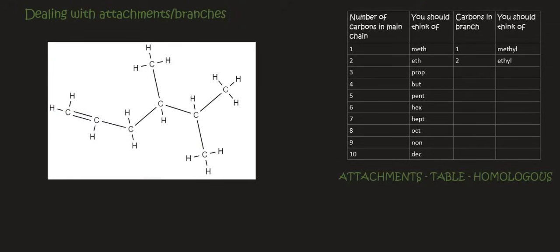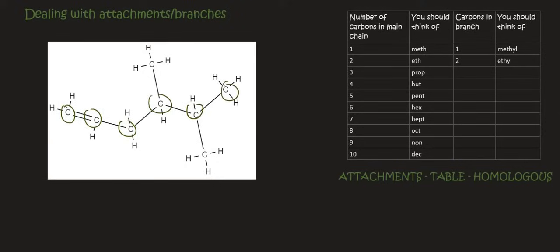Back to this molecule. We're going to start labeling from carbon number 1 because that's where the functional group is. We're not going to worry about where the branches are — a functional group is much more important than a branch. It's only for alkanes that we look at branches instead. We've got a 6-carbon chain, so that's hex-, and this is an alkene, so we must specify where the double bond is. It's on carbon number 1.